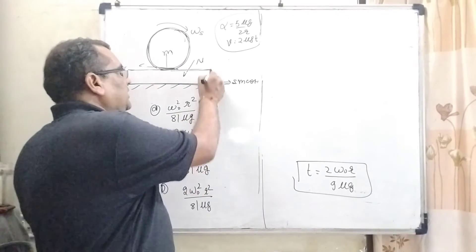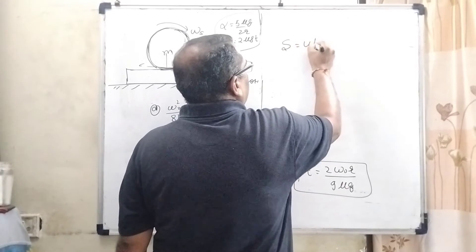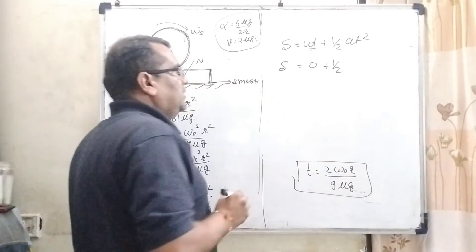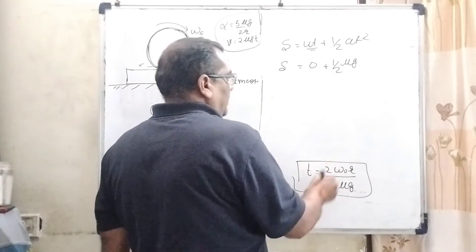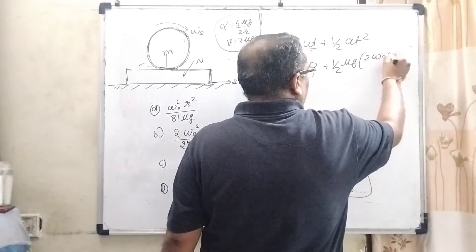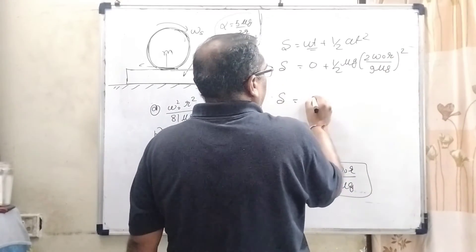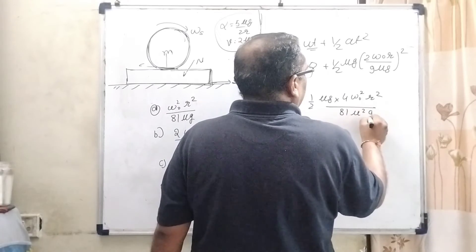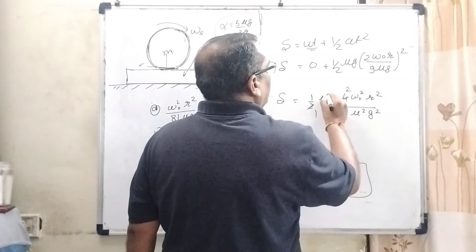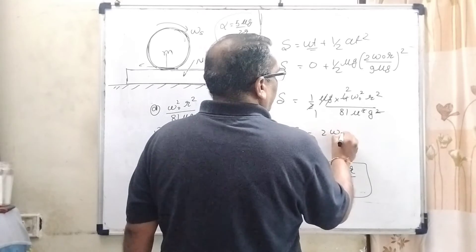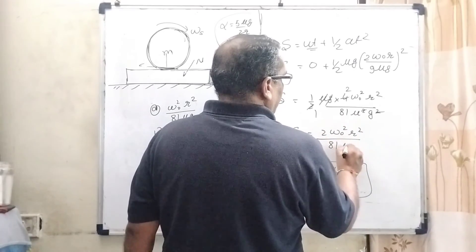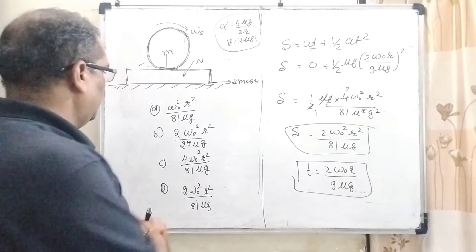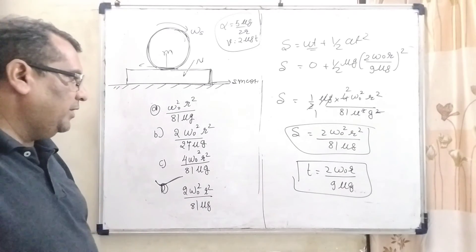Now finding the distance moved by the plank using the second equation of motion: s equals ut plus half a t squared. Initial velocity of plank is 0, acceleration is mu g, and t equals 2 omega naught r upon 9 mu g. Substituting: s equals half times mu g times (2 omega naught r upon 9 mu g) squared equals (1/2) mu g times 4 omega naught squared r squared upon 81 mu squared g squared. Simplifying: s equals 2 omega naught squared r squared upon 81 mu g. This matches option D: 2 omega naught squared r squared upon 81 mu g.